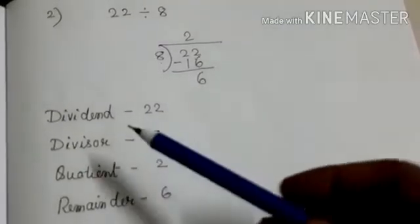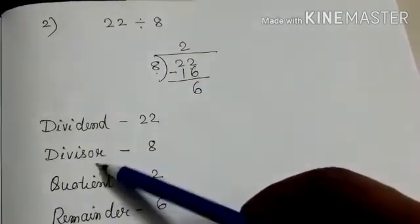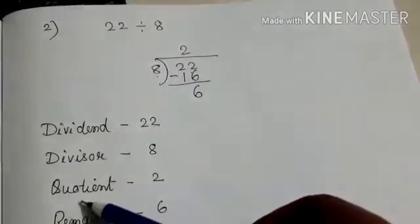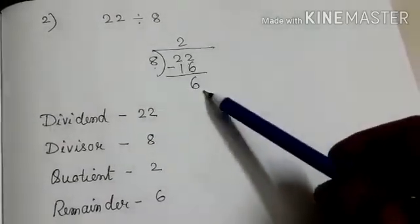Now see children. Our dividend is 22. Divisor is 8. Quotient is 2. And remainder is 6.